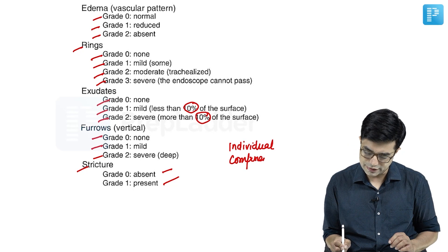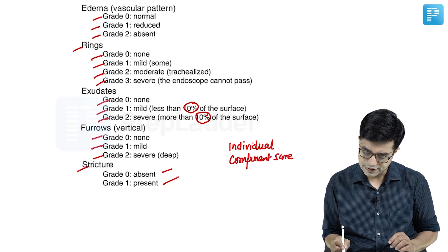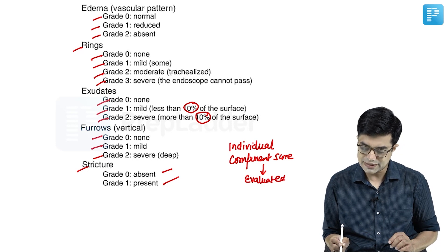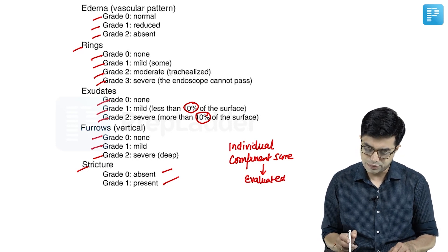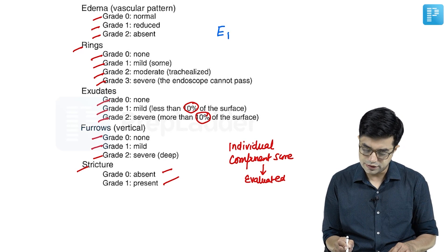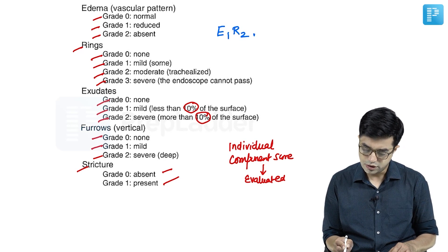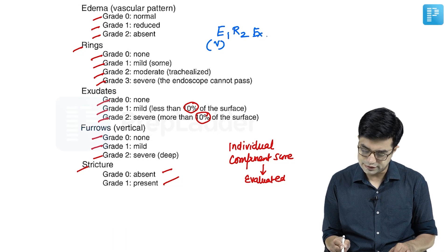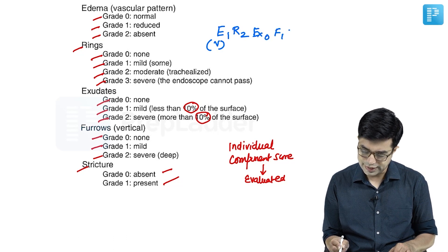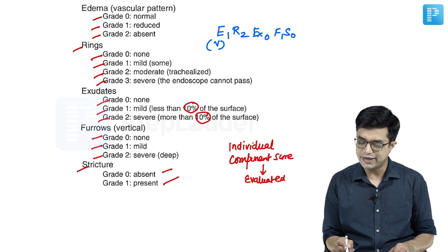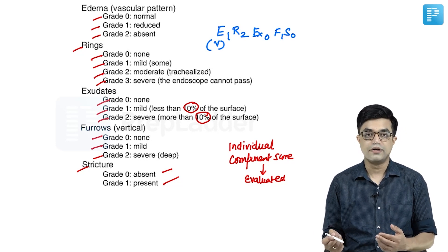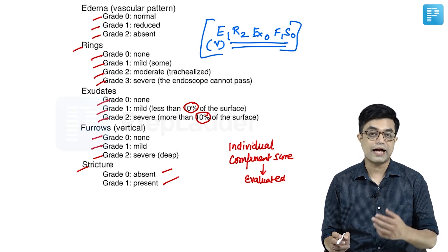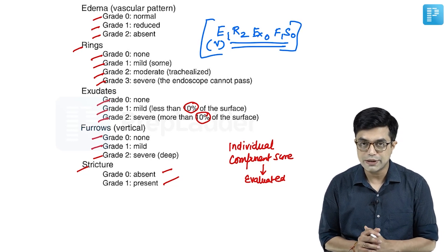Individual component score is considered better than total score. You should specifically mention the patient has E1, R2, E0 for exudates, F1 for furrows, S0 for strictures. You should not write as a total score of 4.